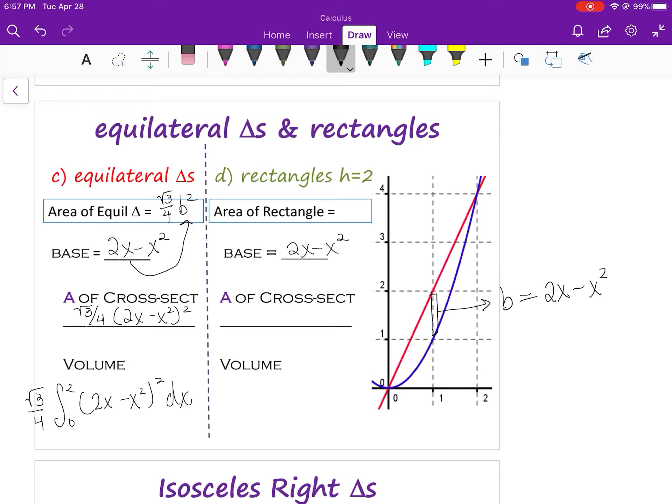And then for the next one, the rectangle whose base, whose height was 2, was 2B. So I would put this in right here for B. And the volume is going to be pretty straightforward, just like that.